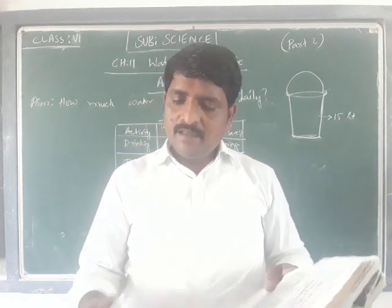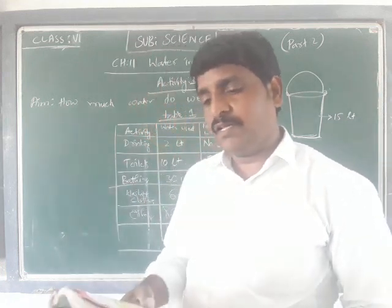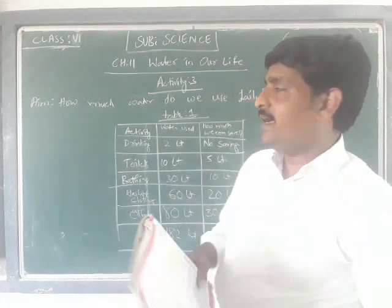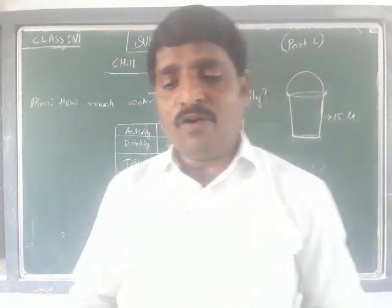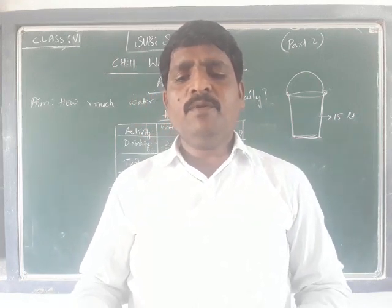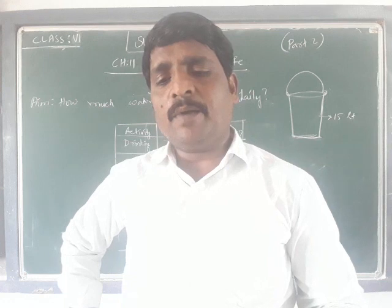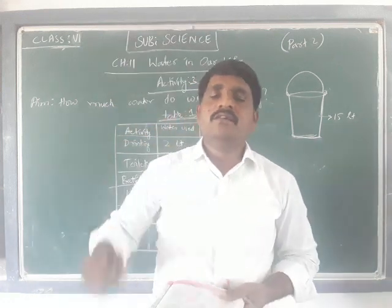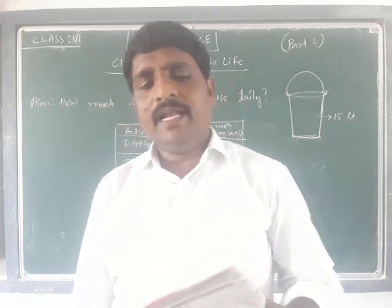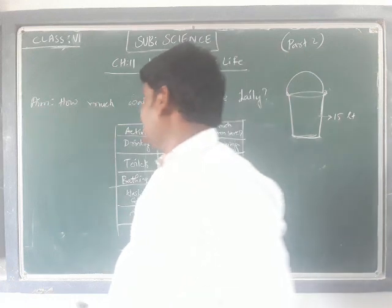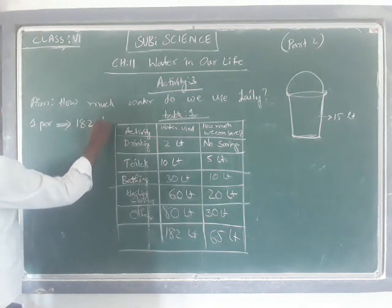Now find out how much water is used in a whole day by you and your family, and also calculate the amount of water your family was able to save. This is for a single family. You have a rough idea of how much water your family uses in a day. With this information you may be able to calculate the approximate quantity of water required for a colony, village, or town. For this you need to know the population as well. One person is using 182 liters from this calculation.